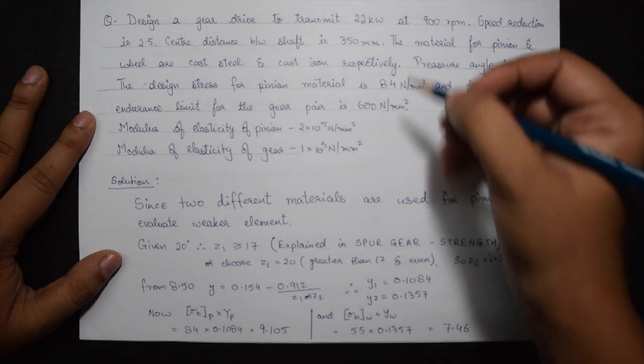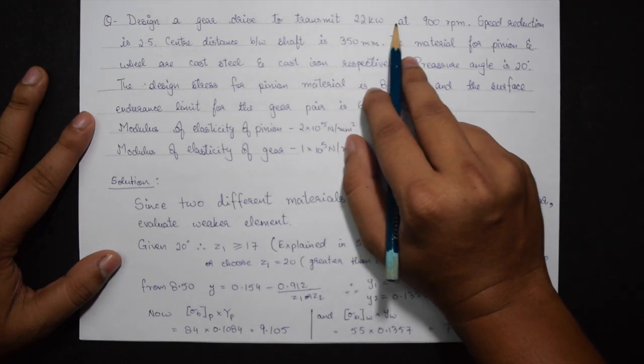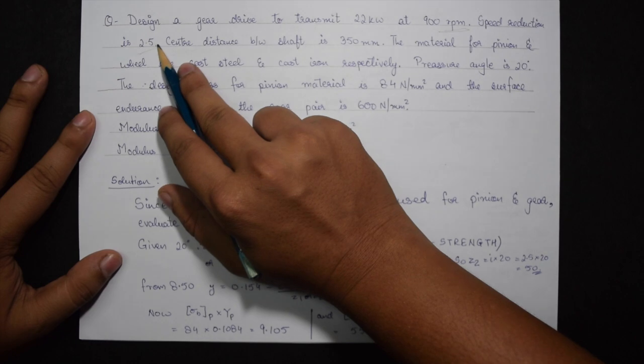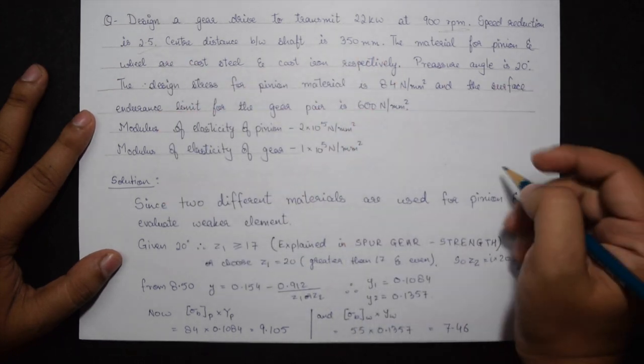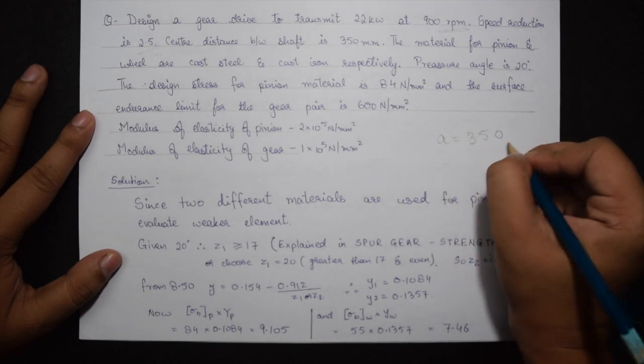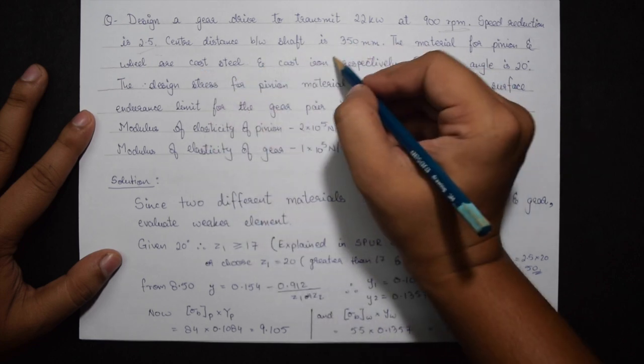Jumping onto the question directly, we need to design a gear drive to transmit 22 kW at 900 rpm. Speed reduction is 2.5. Center distance between shaft is 350 mm. So here we see that the value of A is given, that is 350.